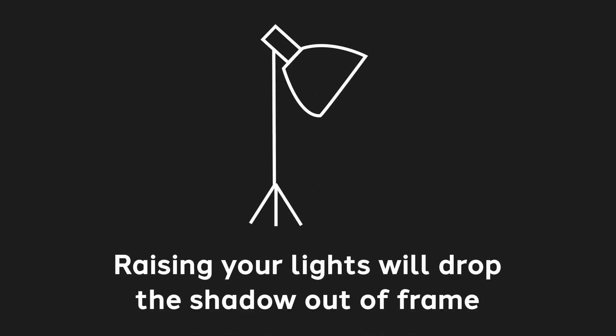If you don't have the ability to move everything back, another thing you can do is to raise your lights up. By raising your lights up, it will then drop the shadow down lower. Now, it still may be a little bit more visible, but it's not going to be right next to you like this one is.